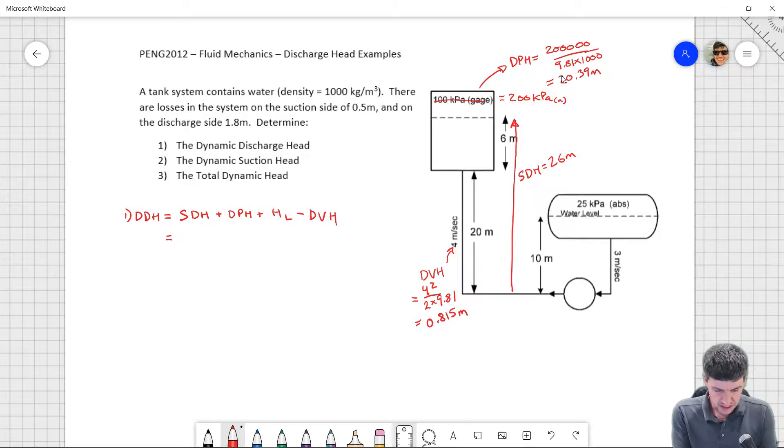Okay, so my dynamic discharge head is going to be my static discharge head 26 meters plus my dynamic pressure head 20.39 meters plus the head loss on the discharge side which was given in the problem 1.8 meters minus the velocity head 0.815 meters. And altogether that gives me 47.375 meters.